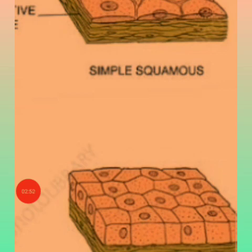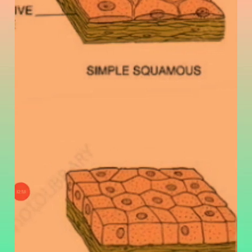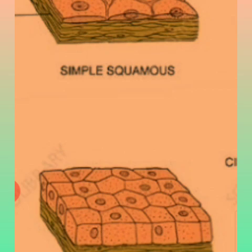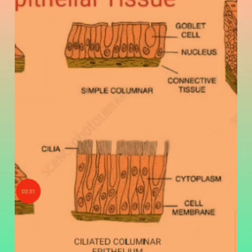The second type is cuboidal epithelium. As you can see in the diagram, it consists of a single layer of cube-shaped cells. The function of cuboidal epithelium is the secretion of substances. These are found in kidney tubes and small glands, where glands are responsible for hormone secretion and kidneys have their own specialized secretion.